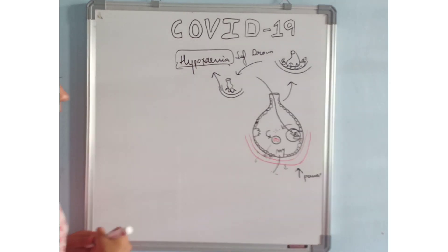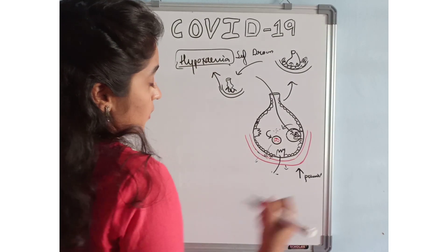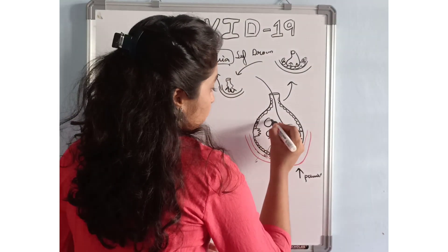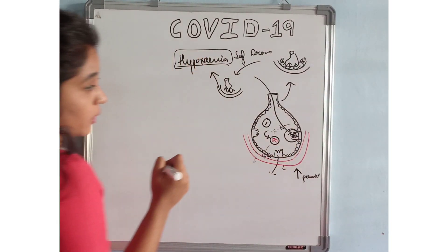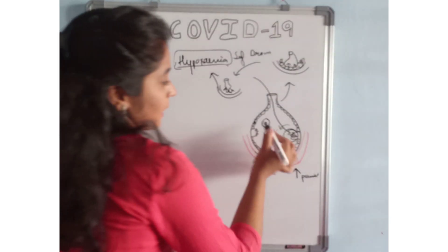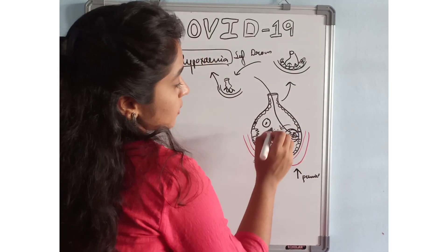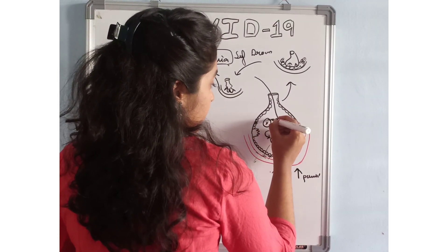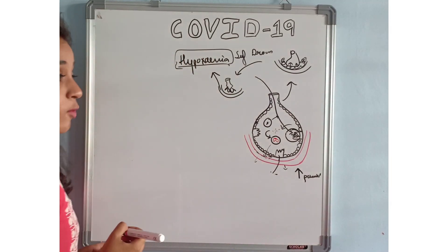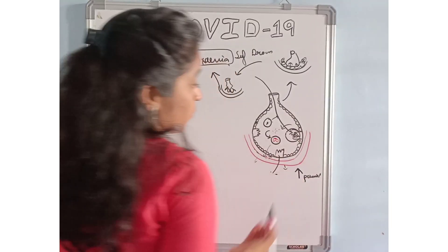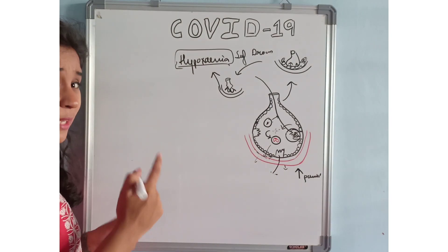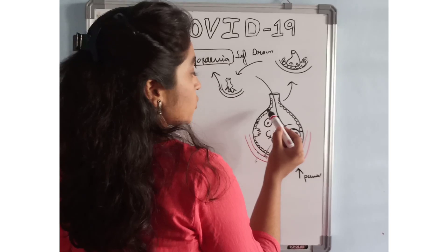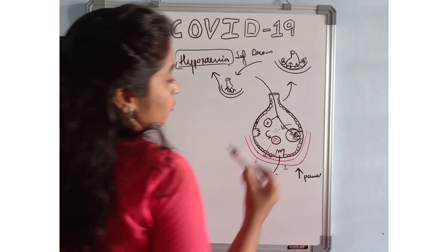These inflammatory mediators also attract a lot of neutrophils. These neutrophils are not going to sit silent. They will try to destroy or kill the viruses. They release reactive oxygen species and proteases which destroy viruses, but they also destroy our cells in the alveoli.